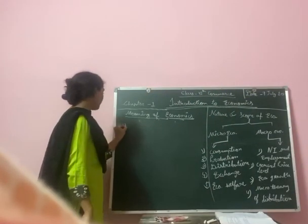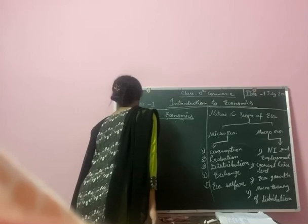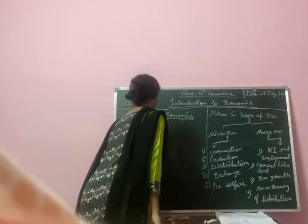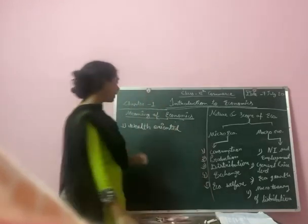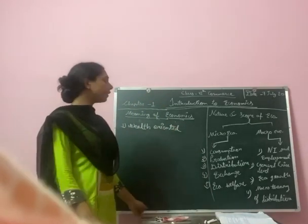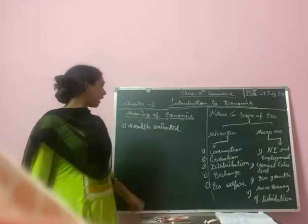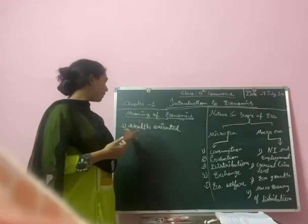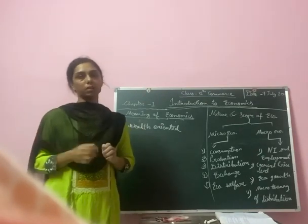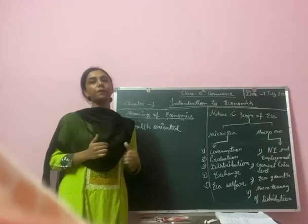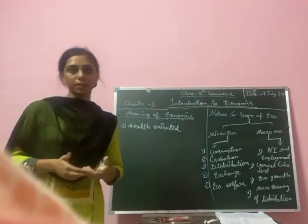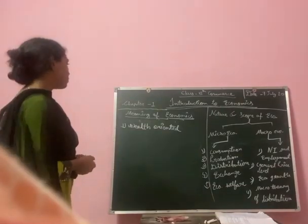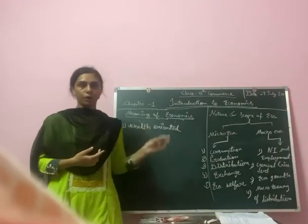The most important is the economic definition. The first definition is given by Adam Smith. He described that a person has a direct relation with money and earnings. A person's needs can be completed only by money, so they can earn more money and be fulfilled, according to Adam Smith.